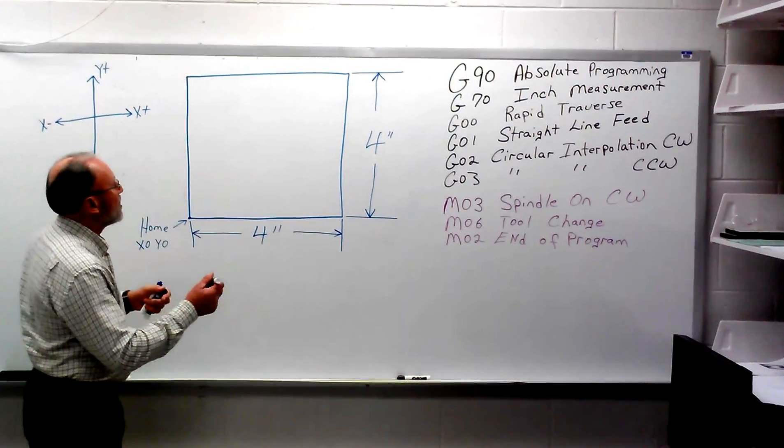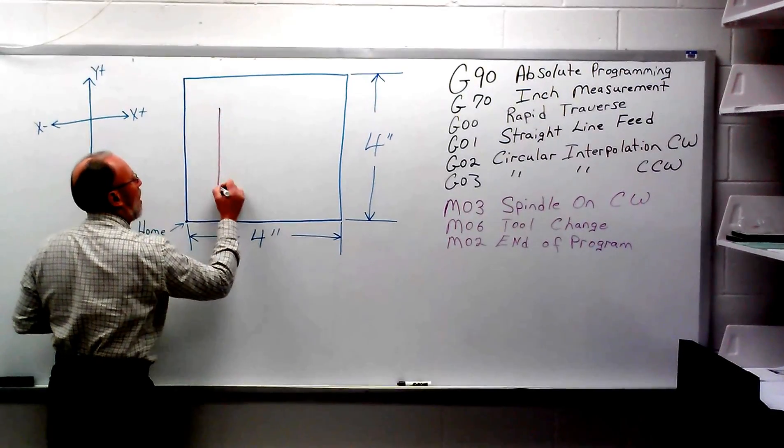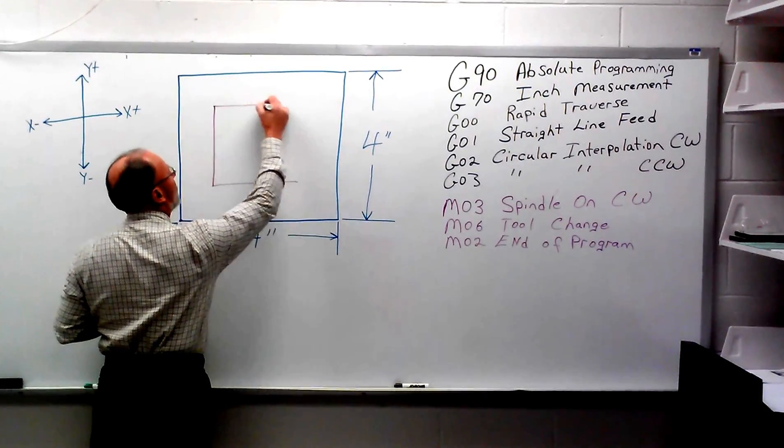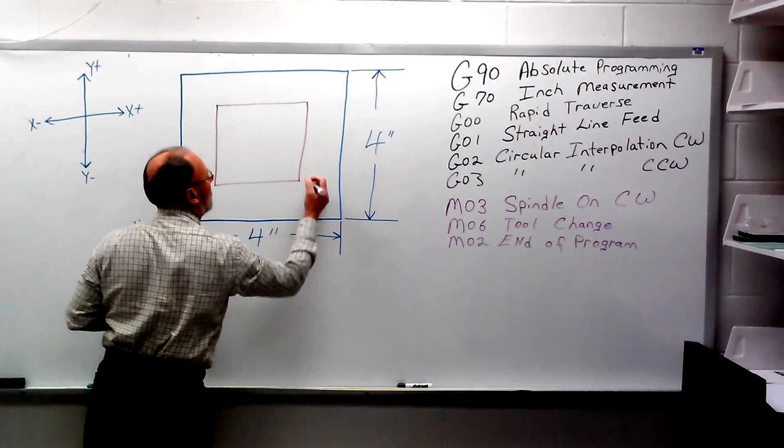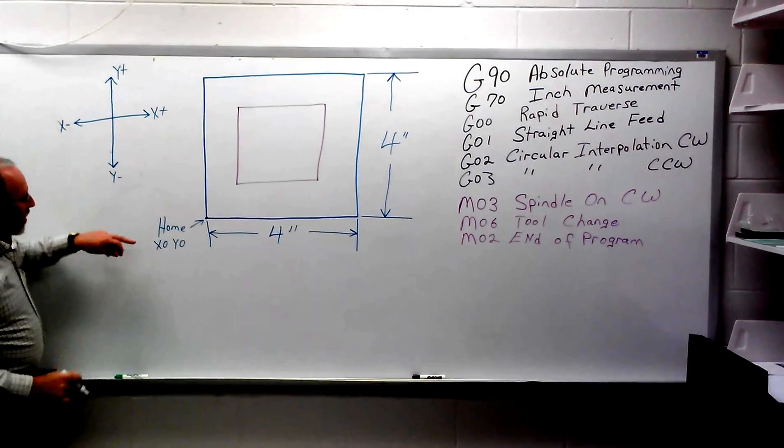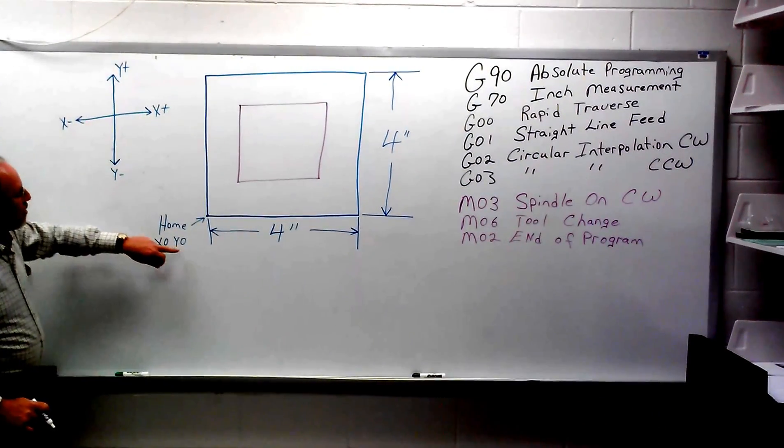The very first thing I'm going to do is draw a 2 inch by 2 inch inside of this 4 inch by 4 inch block. I'm starting in the bottom left corner, and this is going to be holding what we call X0, Y0.